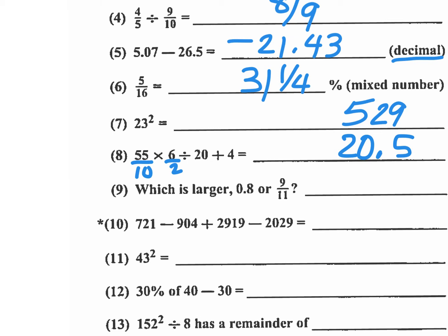Number 9, which is larger, 0.8 or 9 elevenths? So what is 9 elevenths as a decimal? 9 elevenths is a repeating decimal. If I multiply this numerator and denominator by 9, I have 81 over 99, which is 81 repeating. So 0.81 repeating is larger than 0.8. So the answer there should be 9 over 11.